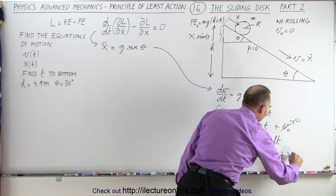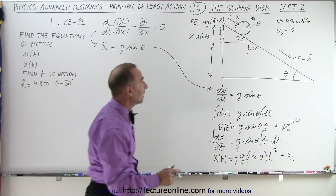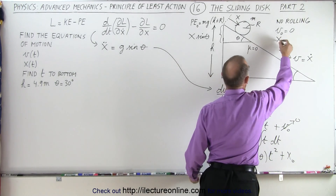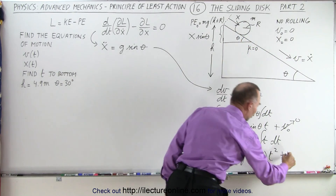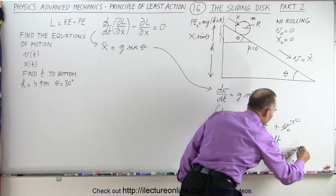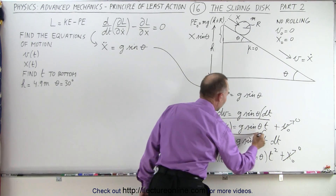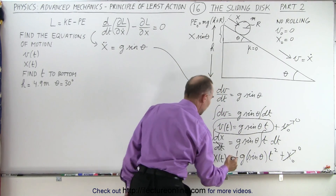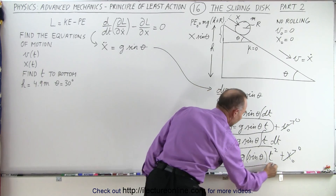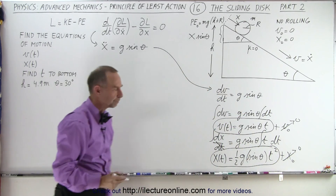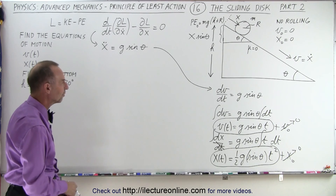And of course plus x-naught, the original position. If we assume that x-naught equals zero because we started at the very top, then this goes to zero as well, and now we have our two equations: the velocity as a function of time and the position as a function of time along the incline. That's what that differential equation allows us to find.